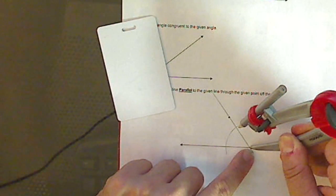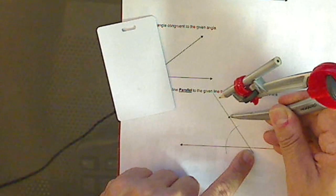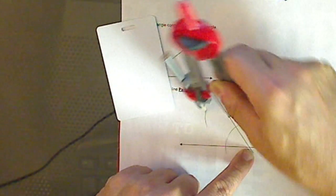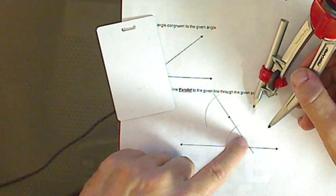Now this arc is equidistant from this point here. I need to make the same type arc from this point, and so I don't adjust my compass. And there you go. Check it out. I'm ready to make corresponding angles congruent.